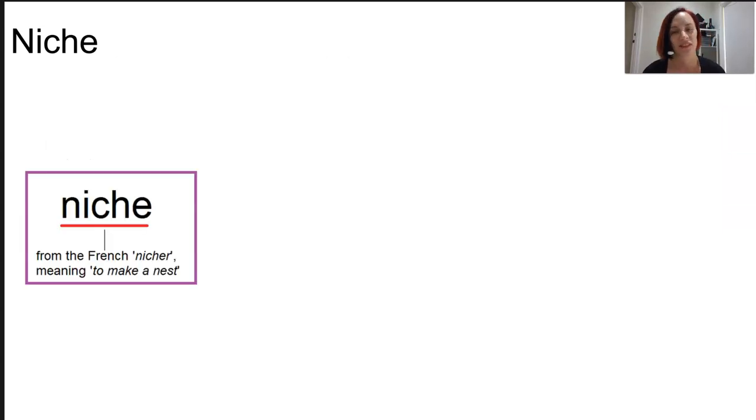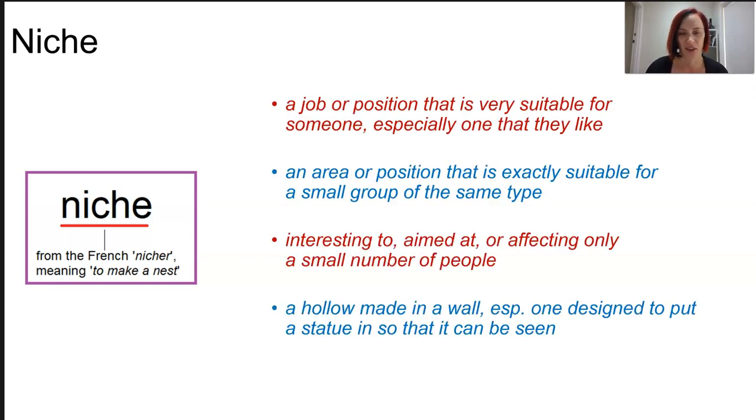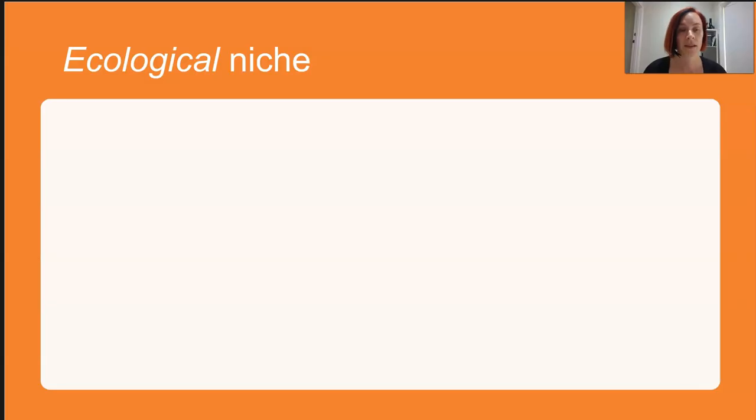Niche has a huge range of definitions depending on the context. In ecological terms, it's an organism's specific position or purpose within the group of organisms with which it lives. Ecological niche is how an organism fits into its ecosystem and the way it functions. While a habitat might be a way to describe its address, an organism's niche is a way to describe its profession or its career.